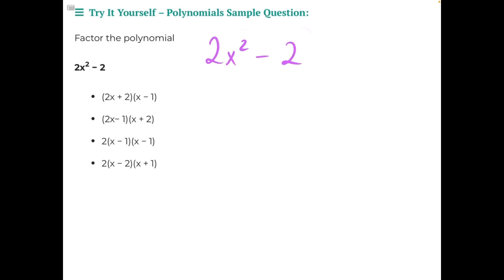If we take a look at both of our terms and see what factor they may have in common, I see that they both have 2 in common. So let's factor out the 2. That would leave behind x squared minus 2 divided by 2 would just give us 1.